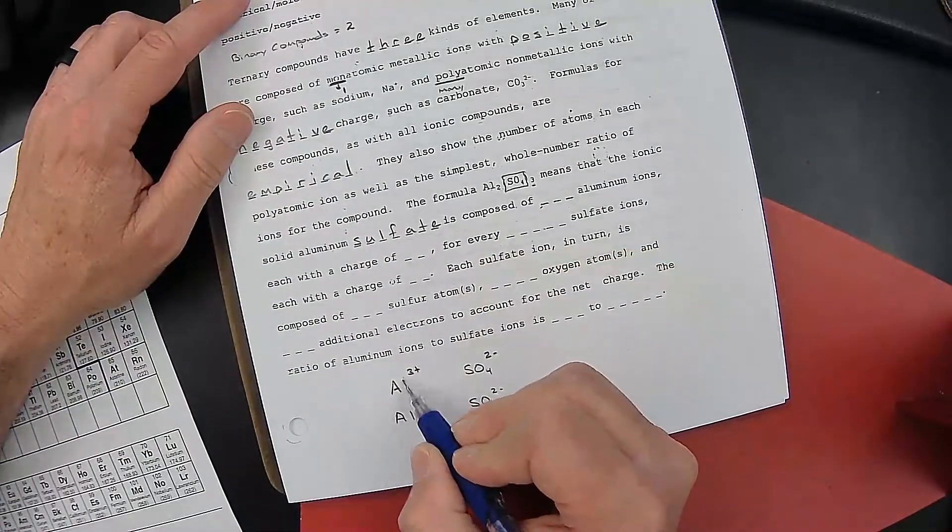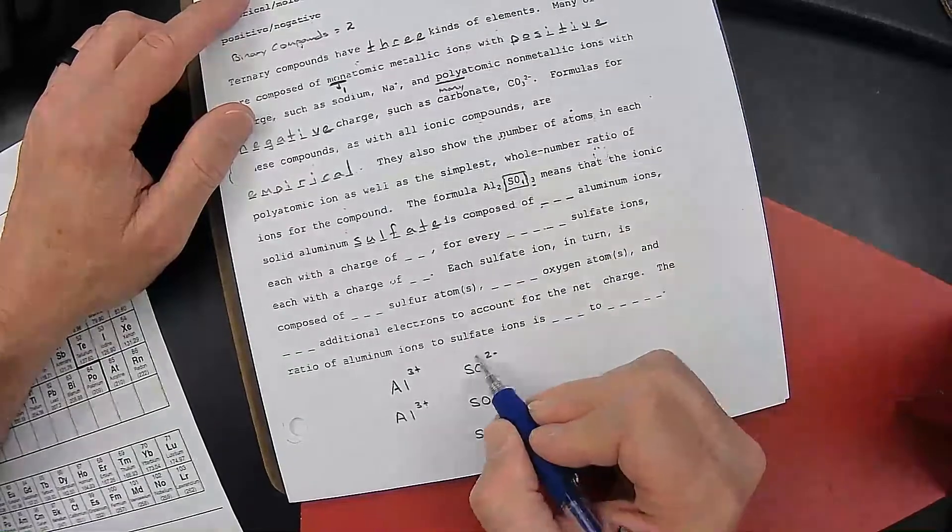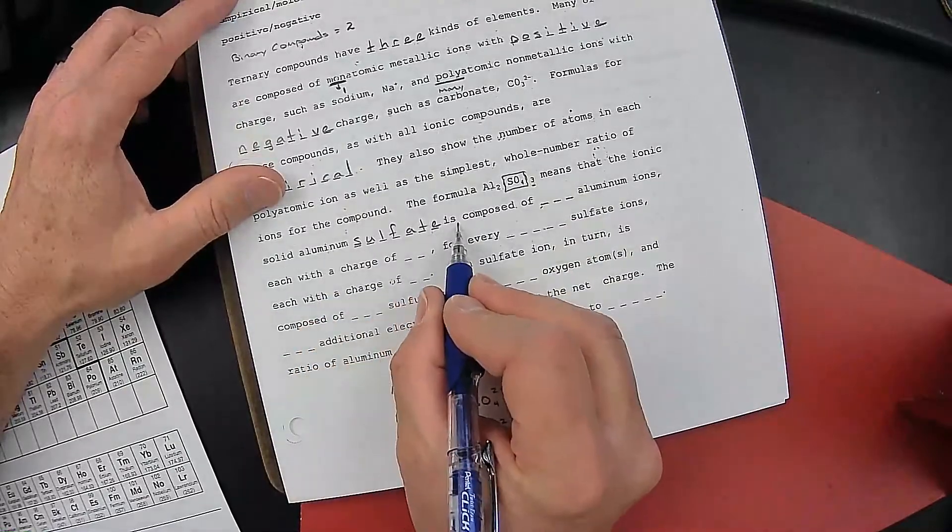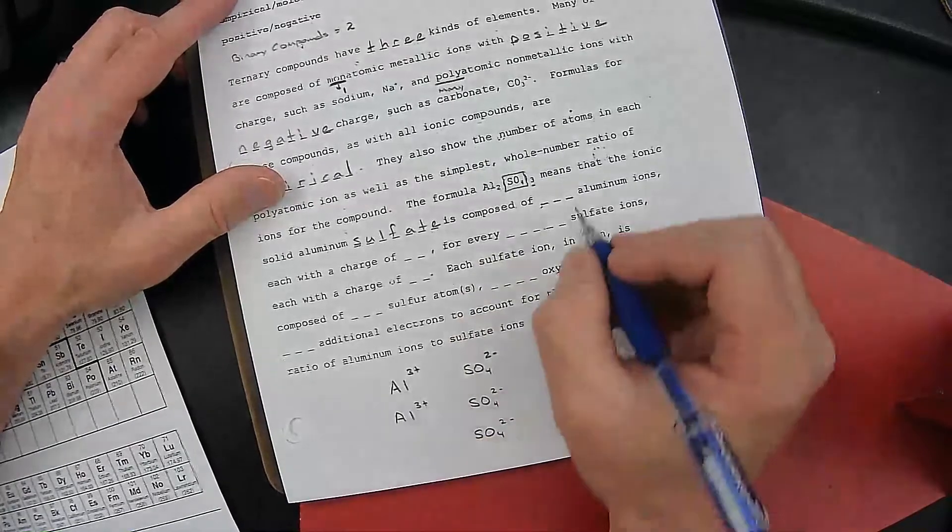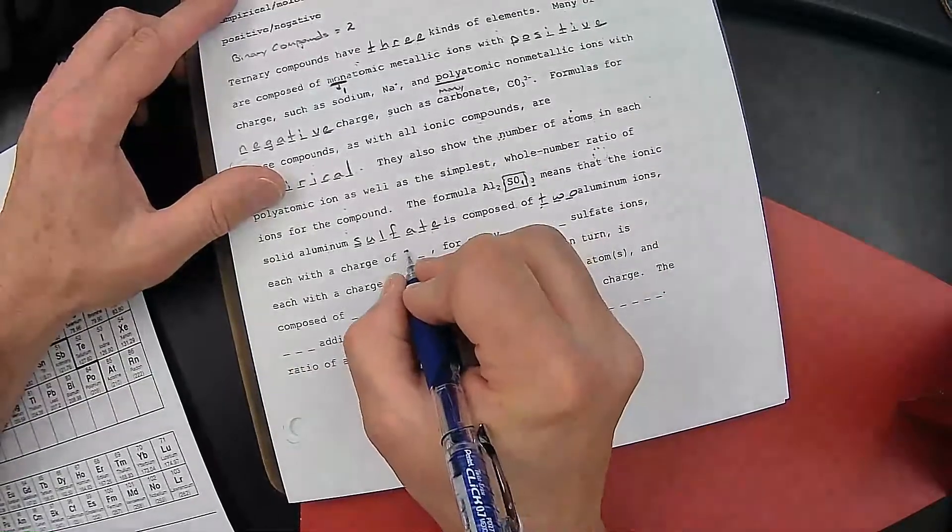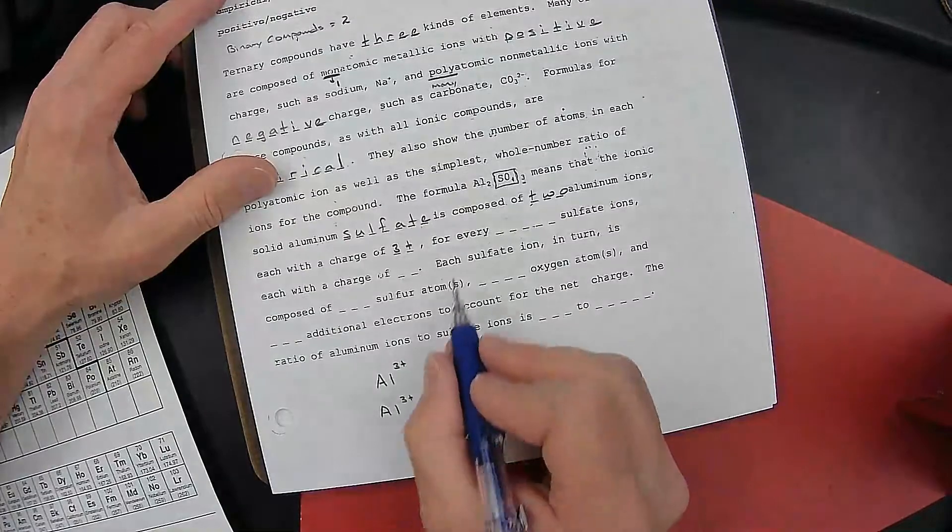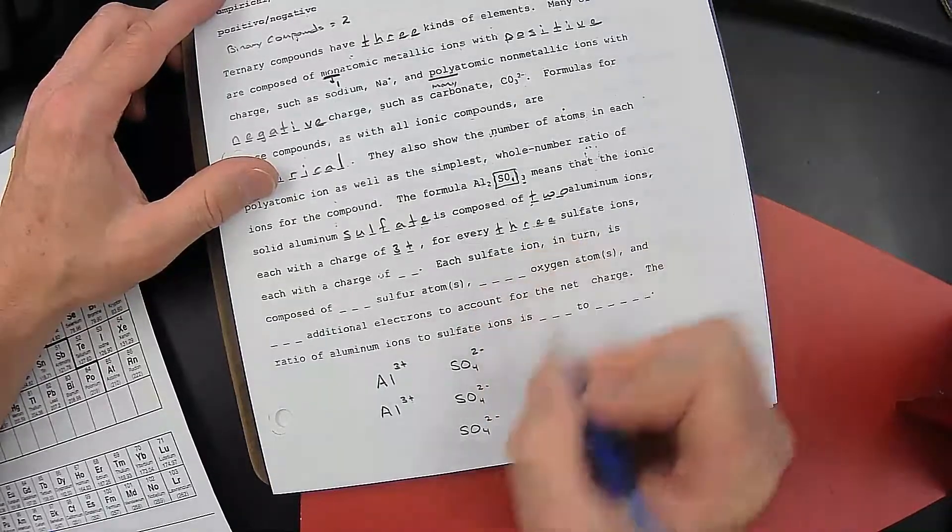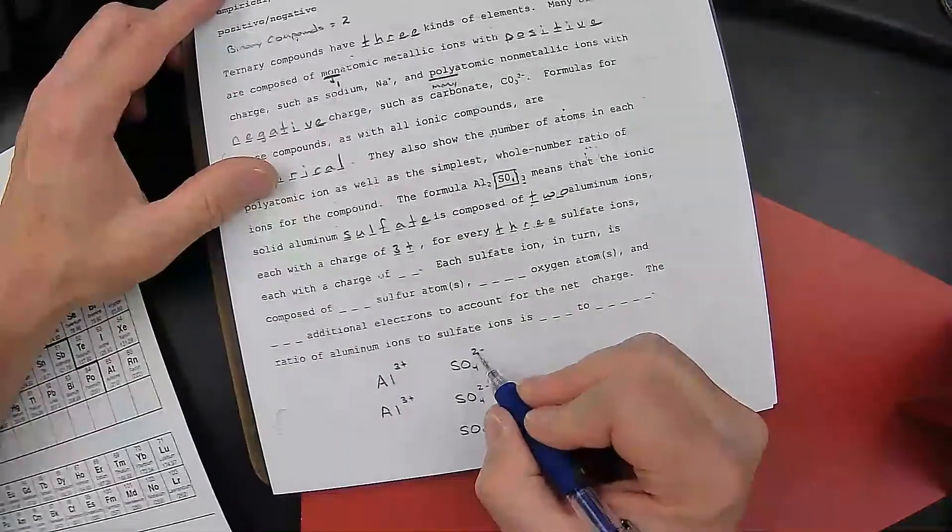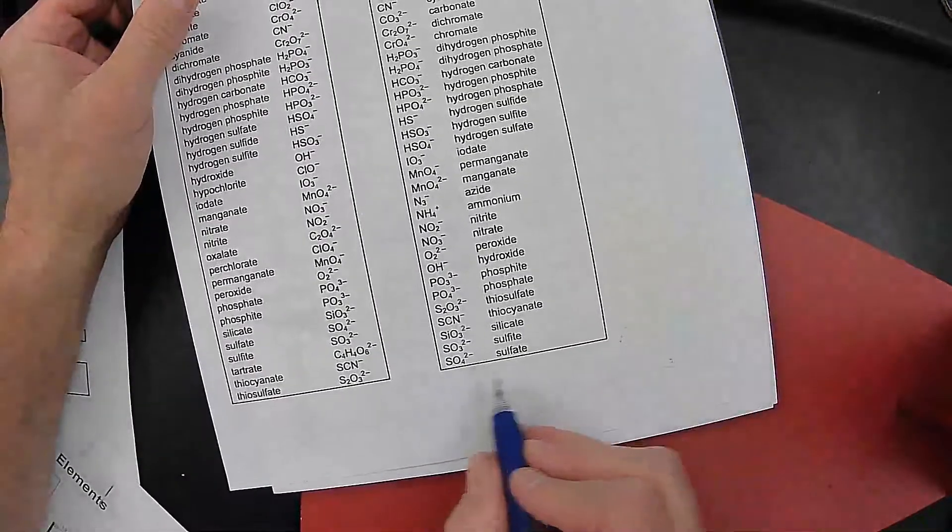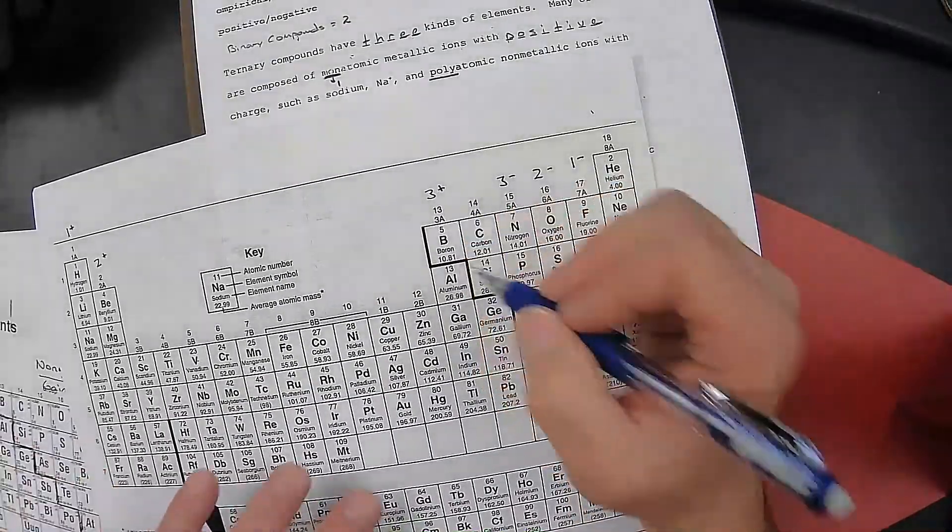This formula shows two Al's for three groups of SO4s. This means the ionic solid aluminum sulfate is composed of how many aluminum ions? Two aluminum ions, each with a charge of 3 plus. For every 1, 2, 3, 3 sulfate ions, each with a charge of 2 minus, 2 minus, 2 minus. The sulfate charge came from the backside of the periodic table, your polyatomic ion charge. The aluminum charge came from the periodic table, column 3A.